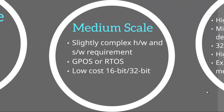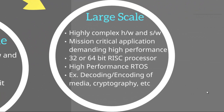In medium-scale embedded systems, the complexity increases in both hardware and software. As a result, operating systems are required — either general-purpose or real-time. Microcontrollers used would be 16-bit or 32-bit. In large-scale embedded systems, both the hardware and software are highly complex. These are machine-critical and demand high performance and accuracy. 32-bit and 64-bit RISC processors are used, with a very advanced instruction set. A high-performance RTOS is used to meet the demands of the application. Examples include decoding and coding of media, cryptography, etc.